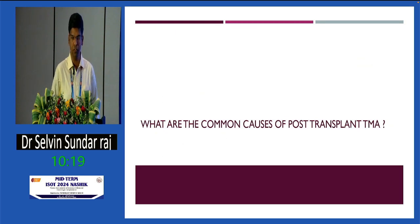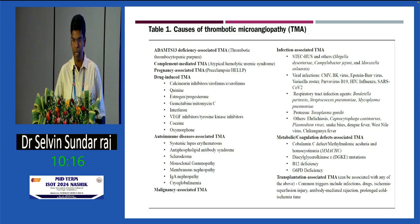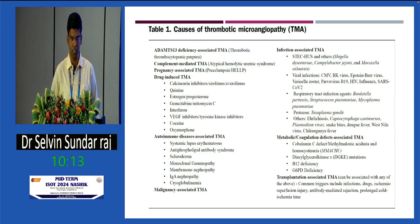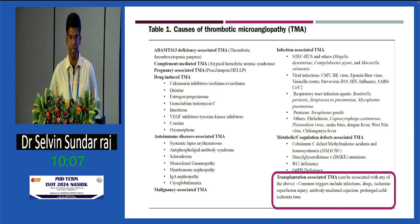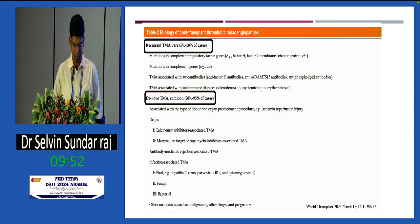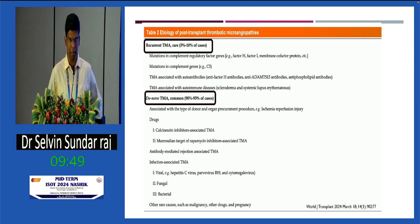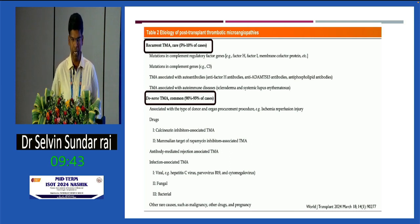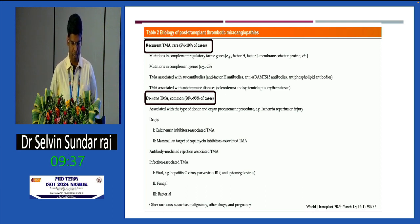What are the common causes of post-transplant TMA? Any cause that can produce TMA in the native kidney can also occur in transplant patients. Common triggers include infections, drugs, ischemia-reperfusion injury, antibody-mediated rejection, or prolonged cold ischemia. Post-transplant TMA can be classified into two types: recurrent TMA in a patient whose native kidney disease was TMA, or de novo TMA. De novo TMA is more common, representing 90 to 95% of cases, while recurrent TMA is rare at 5 to 10%.